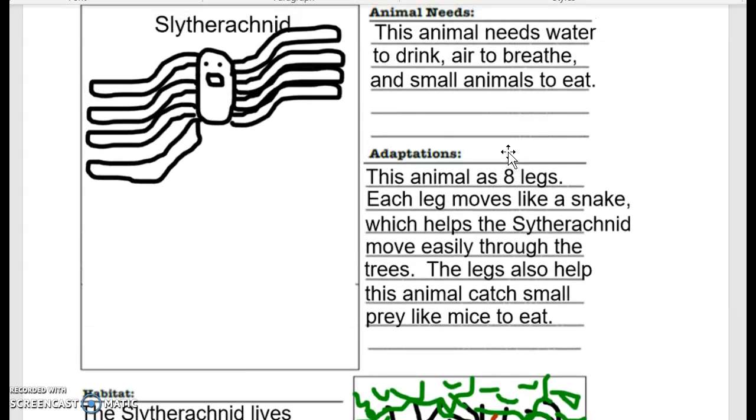Some adaptations. This may have been confusing for you, but maybe if you see mine, it will make sense. What does the slitheracnid have on its body to allow it to live in its habitat? So this animal has eight legs and each leg moves like a snake, which helps the slitheracnid move easily through trees. So its habitat is trees. And these snake legs help it live there. The legs also help this animal to catch small prey like mice to eat. So the adaptation is that these legs that act like snakes on the slitheracnid help it to move in trees and to catch mice.